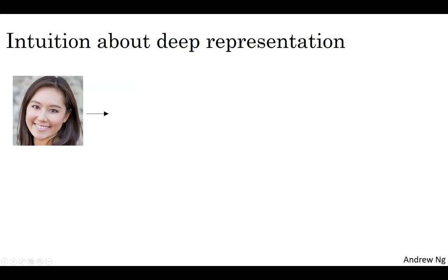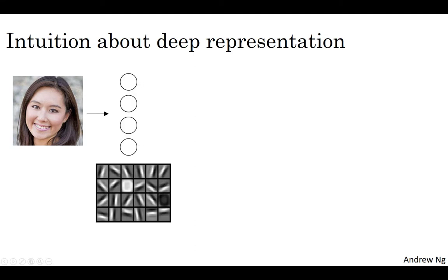Let's go through a couple examples and try to gain some intuition for why deep networks might work well. So first, what is a deep network computing? If you're building a system for face recognition or face detection, here's what the deep neural network could be doing. Perhaps you input a picture of a face. Then the first layer of the neural network, you can think of as maybe being a feature detector or an edge detector.